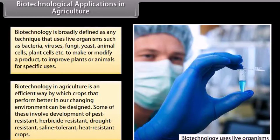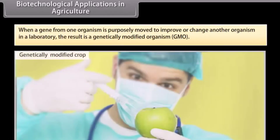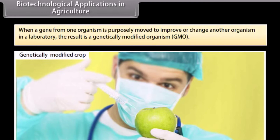Some of these involve development of pest resistant, herbicide resistant, drought resistant, saline tolerant, and heat resistant crops. When a gene from one organism is purposely moved to improve or change another organism in a laboratory, the result is a genetically modified organism, or GMO.